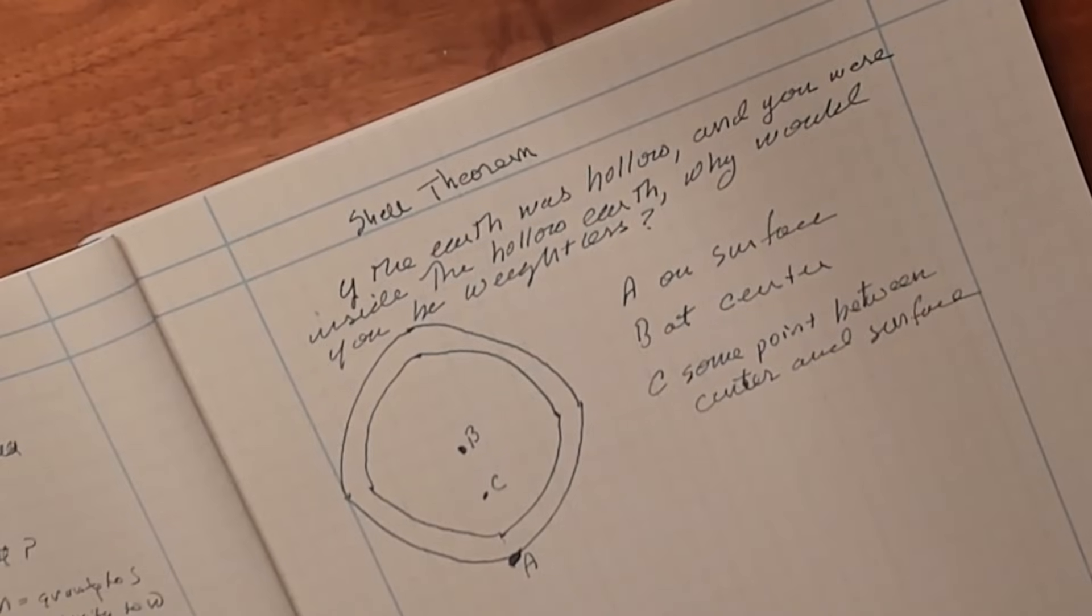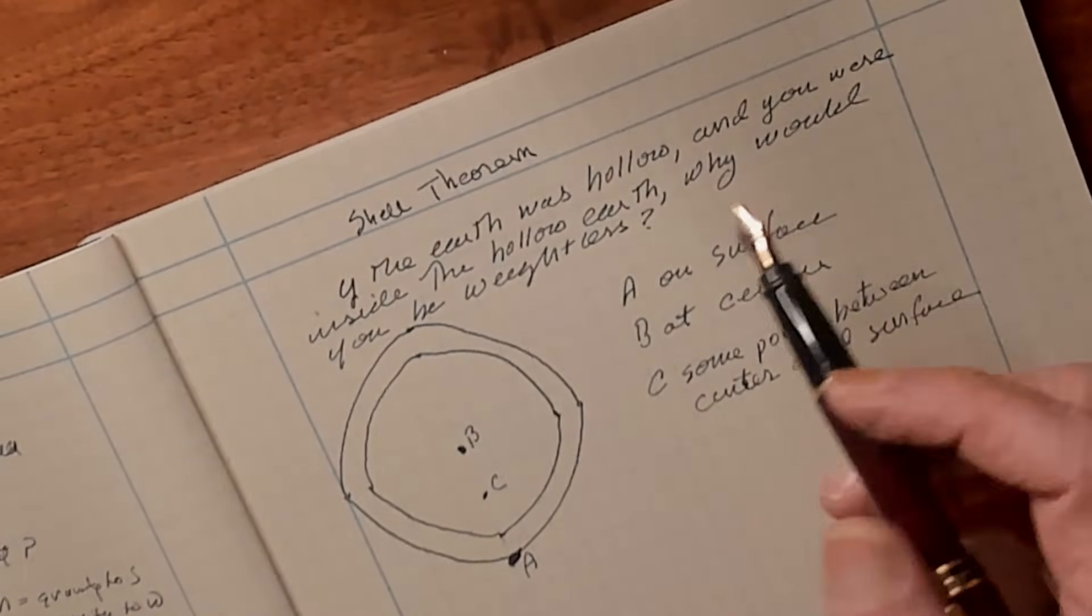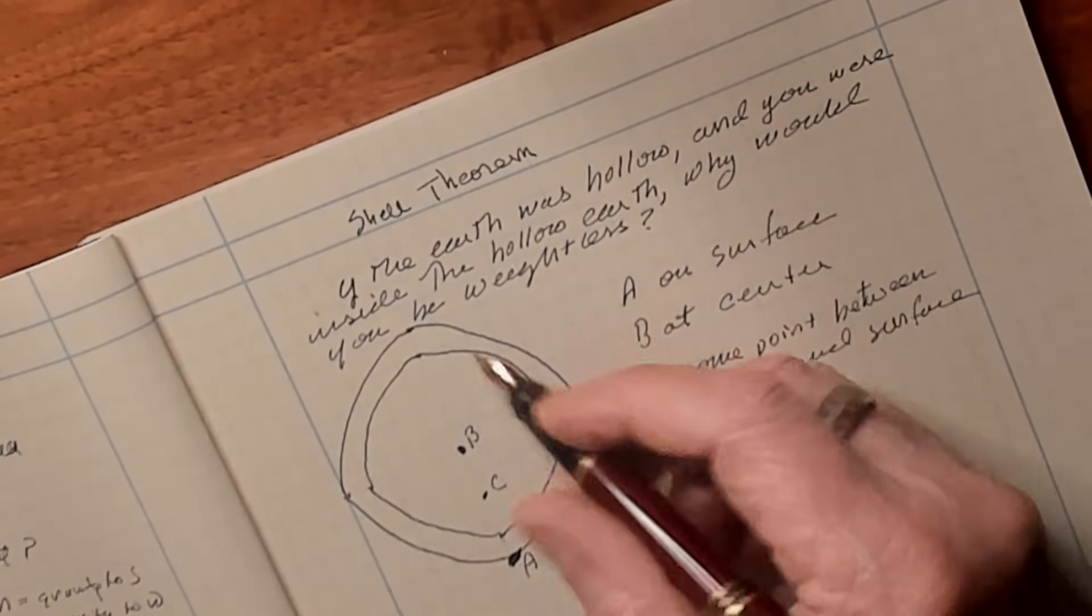So let's look at what I'm talking about. If the earth was hollow and we were on the inside of the earth, why are we weightless? So let's go ahead and look at it real quick. So here we have a hollow earth. Okay, so this is the center of the earth and this is the shell of the earth around it.